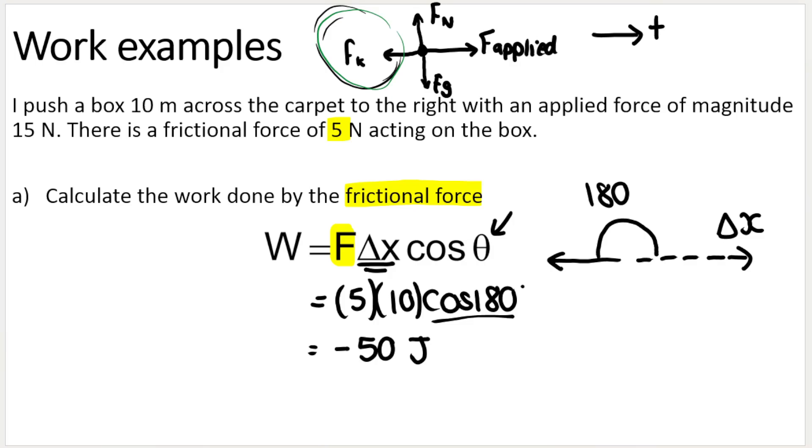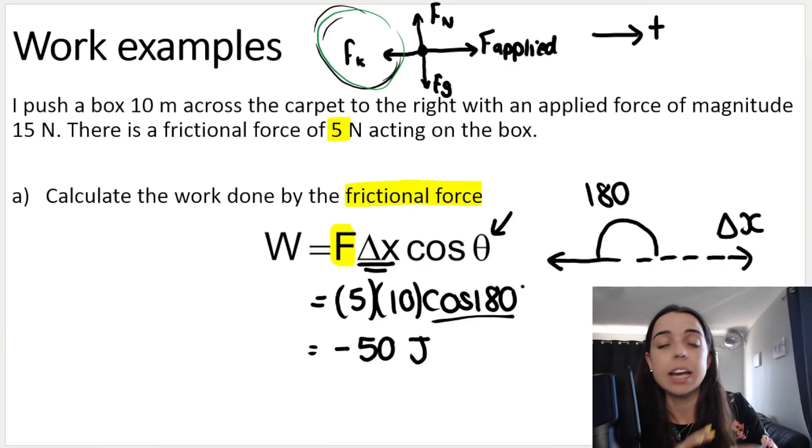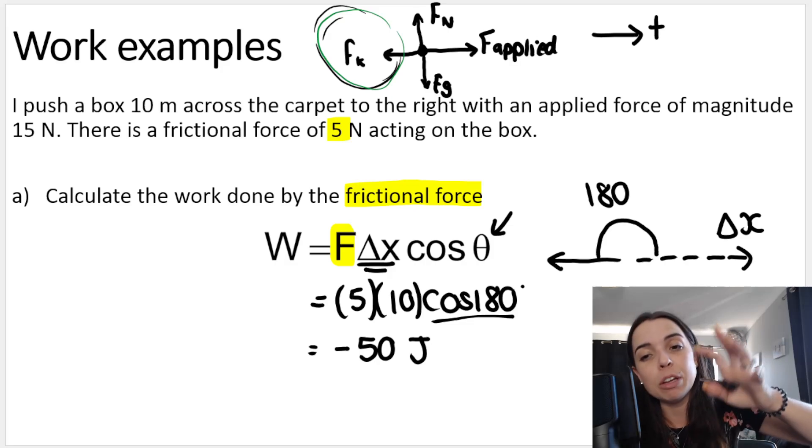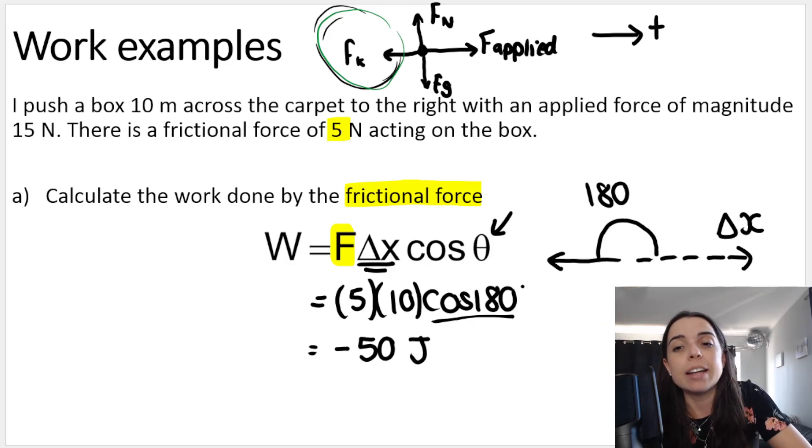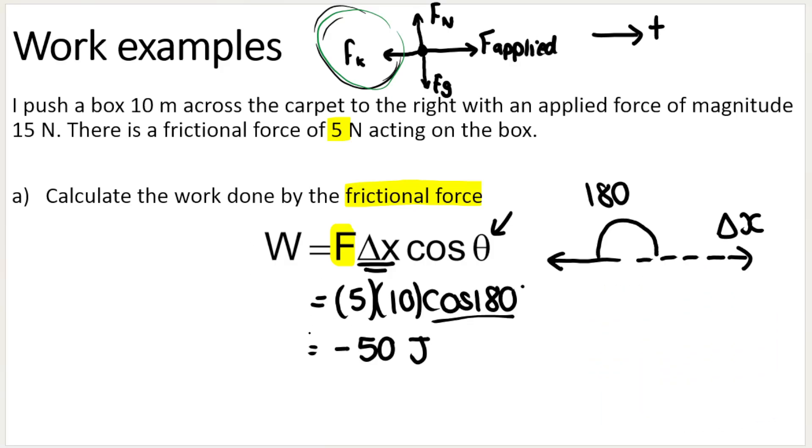So that results in our answer being negative, negative 50 joules. Now we don't change our answer to a positive. It's not like Newton's laws. It's not like when we calculate net force or force. Remember forces are vectors, so if we get a negative force, we change it to a positive and the negative means in the opposite direction. It's not the same with work and energy. When you get a negative answer for work, that negative means that energy is being removed from the box. Energy is being transformed into other forms like heat or light or something like that. So that's what the negative means over there.